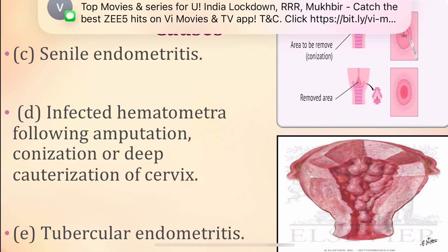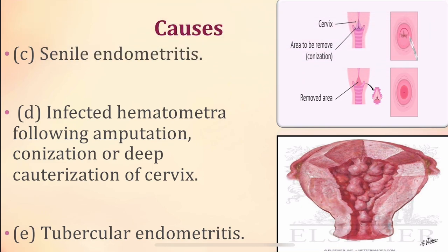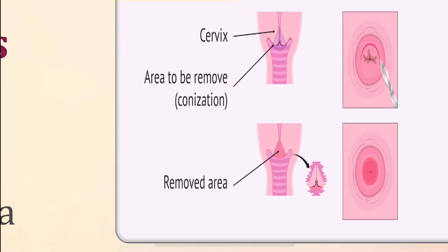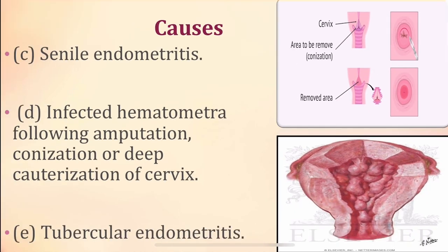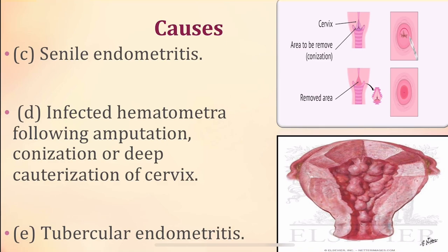Infected hematometra following amputation, conization, or deep cauterization of the cervix. You can see the deep conization and cauterization — a cone-shaped area being removed. Following these operations, we can have infected hematometra also resulting in pyometra. Tubercular endometritis — genital TB in which the uterus is affected — is also associated with pyometra.